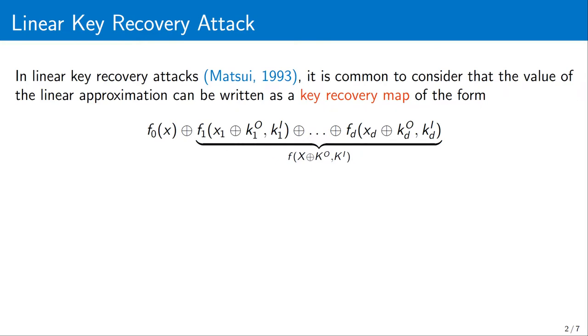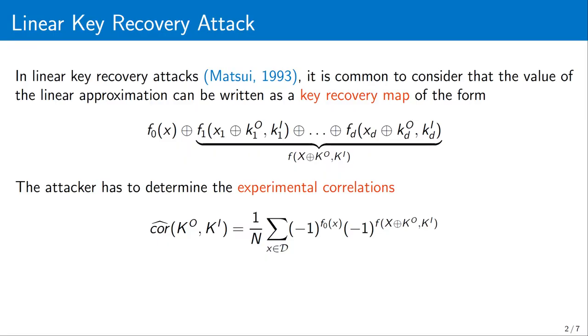In this paper, we assume that part of the key is exhorted directly to the plaintext and the ciphertext. The aim of the attacker is to compute the experimental correlation of this linear approximation for each possible key, with the hopes of distinguishing the correct guess from the wrong ones.